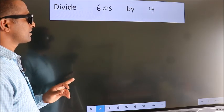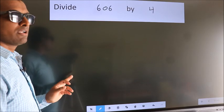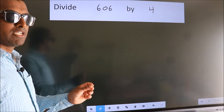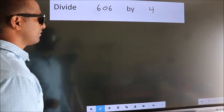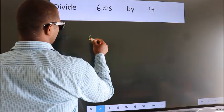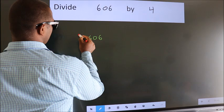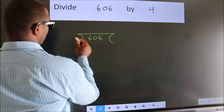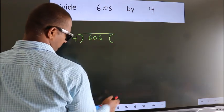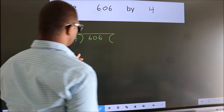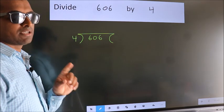Divide 606 by 4. To do this division, we should frame it in this way: 606 here, 4 here. This is your step 1.